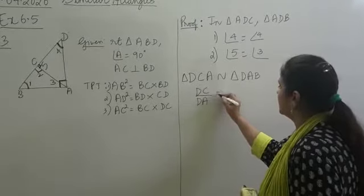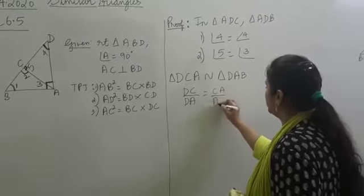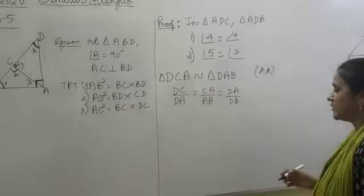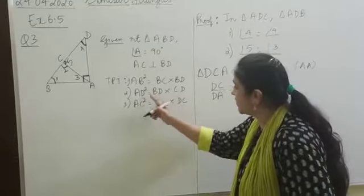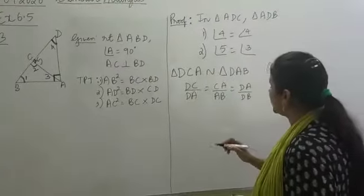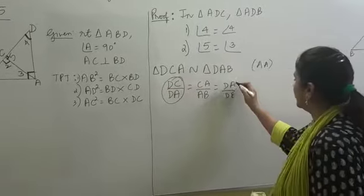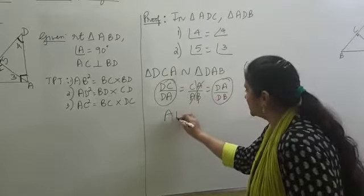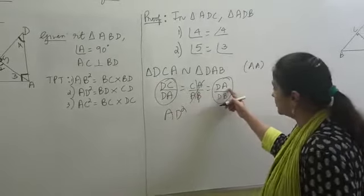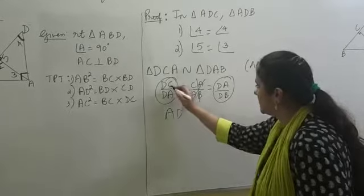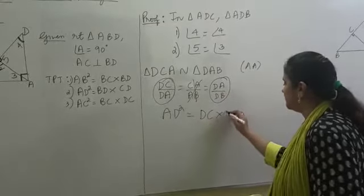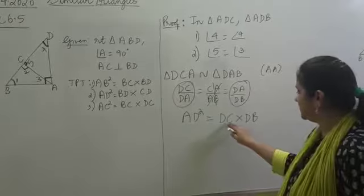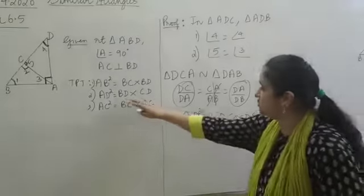Now we write out the proportion: DC/DA = CA/AB = DA/DB. We need to get an expression for AD². We have DA here and DA here, so we ignore the middle ratio and cross-multiply the first and third ratios. This gives us AD² equals DC into DB — that is, AD² equals CD into BD, which is what we needed to prove.